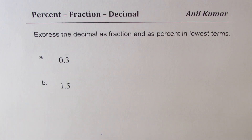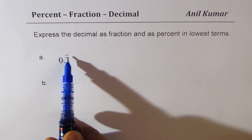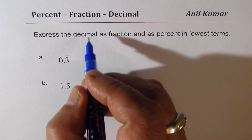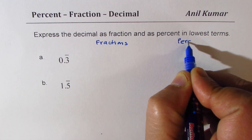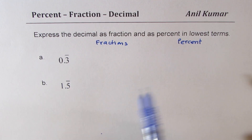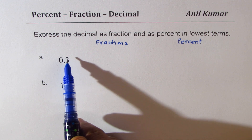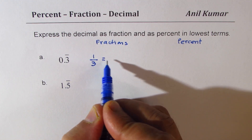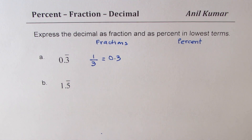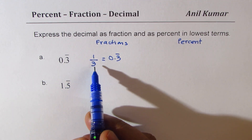In this video I will explain how to express recurring decimals into fractions and decimals. We have two examples: 0.33 recurring and 1.5 recurring. We will write them as fractions and then as percent. We know 1 over 3 equals 0.3 recurring, but here we will learn a process of writing such recurring numbers as fractions.